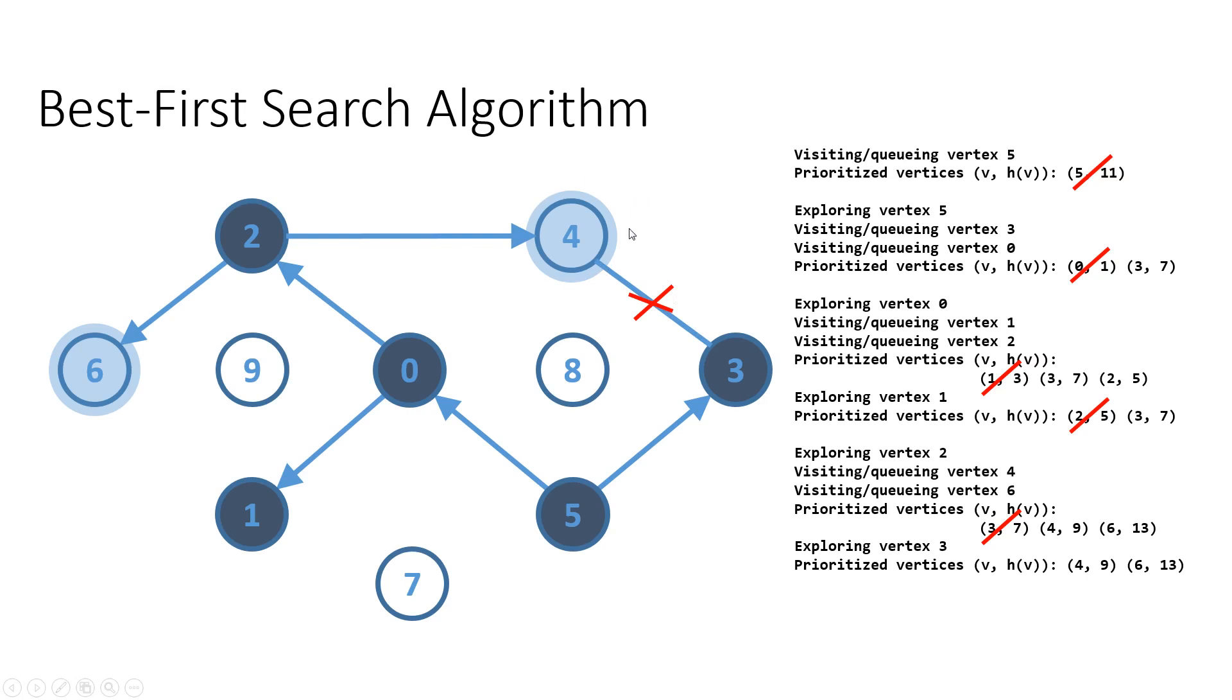Because vertex four is also in the priority queue and vertex three is already explored. So we can go one step further and determine which of the two vertices four and six will be the next to explore.